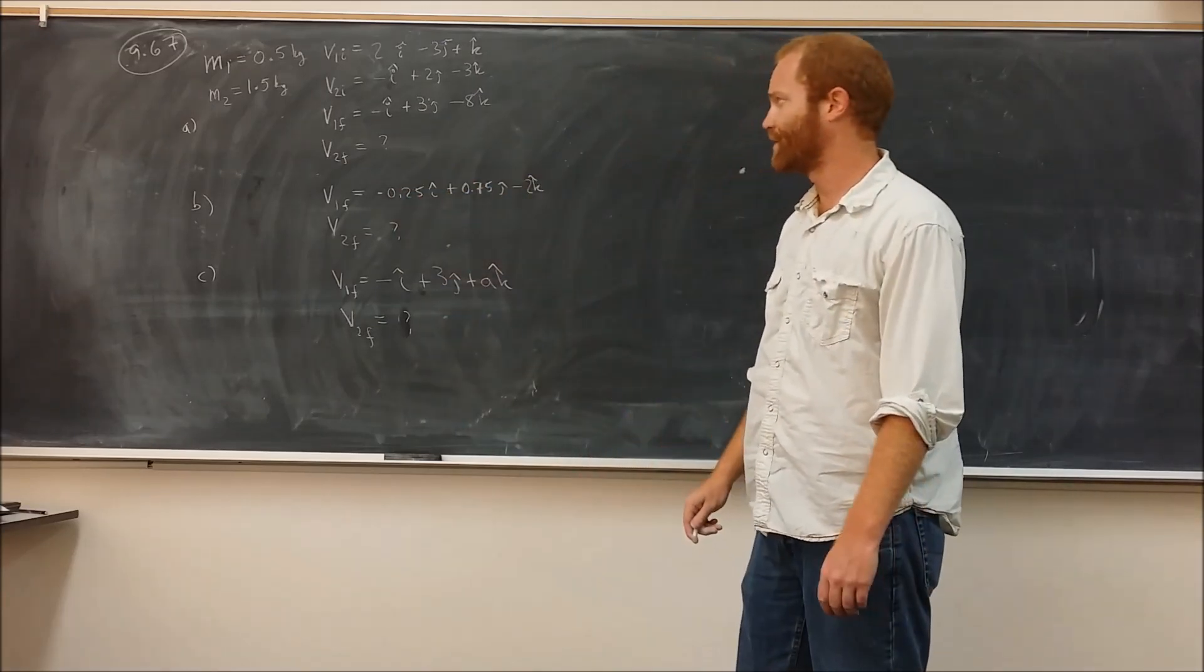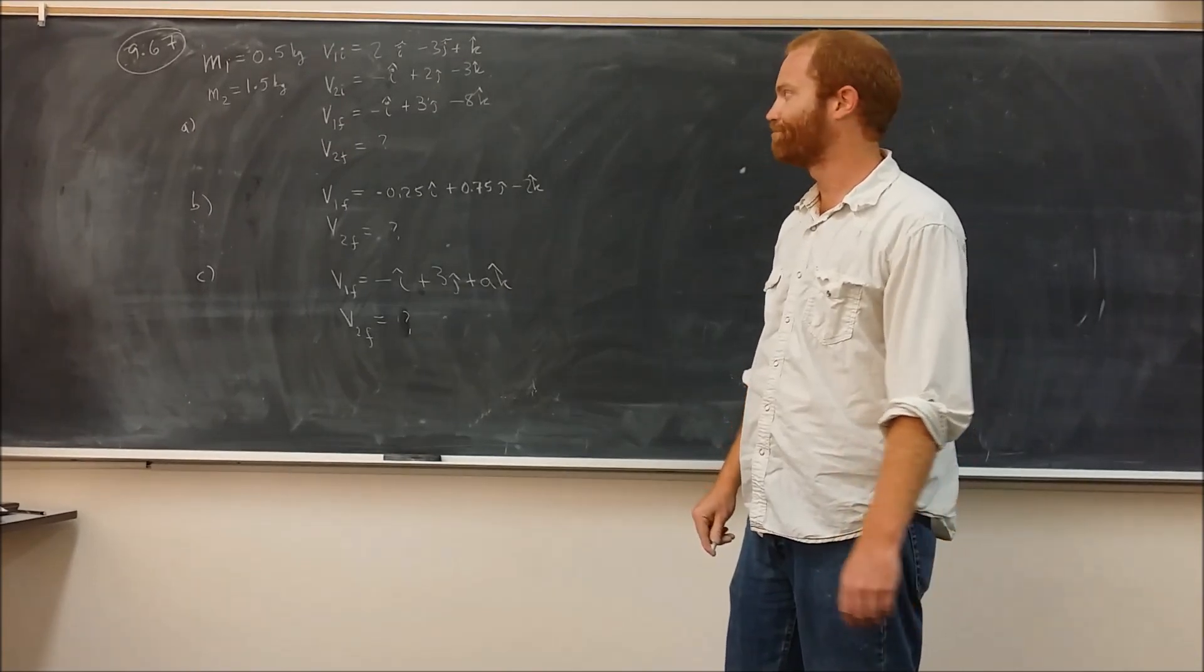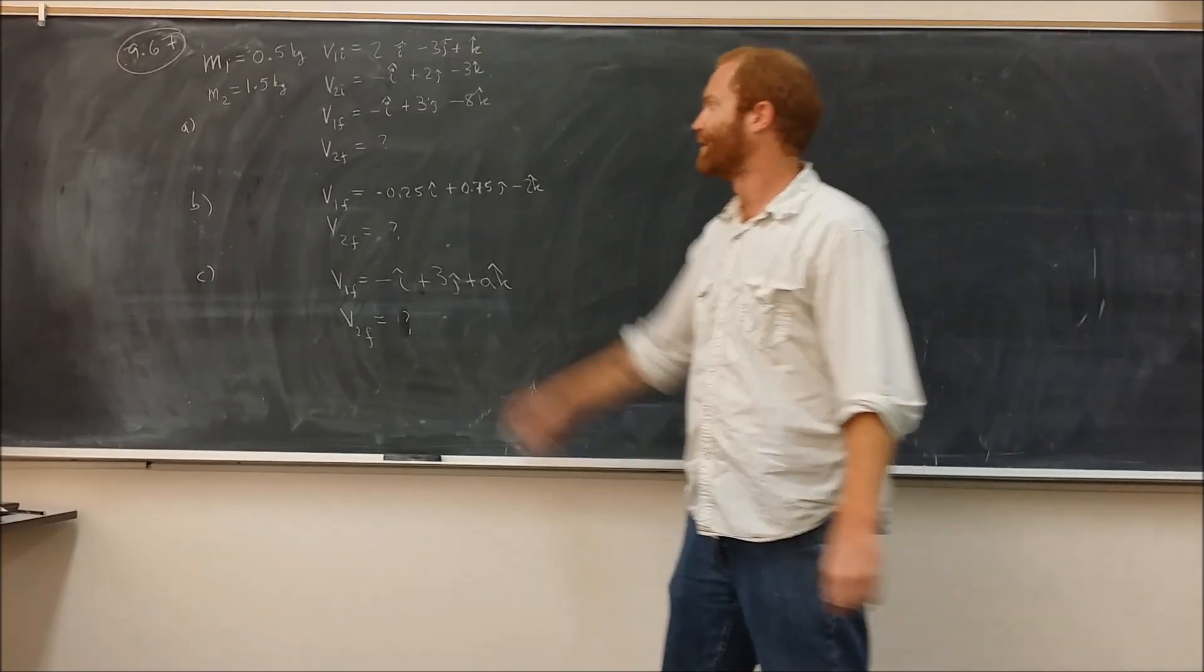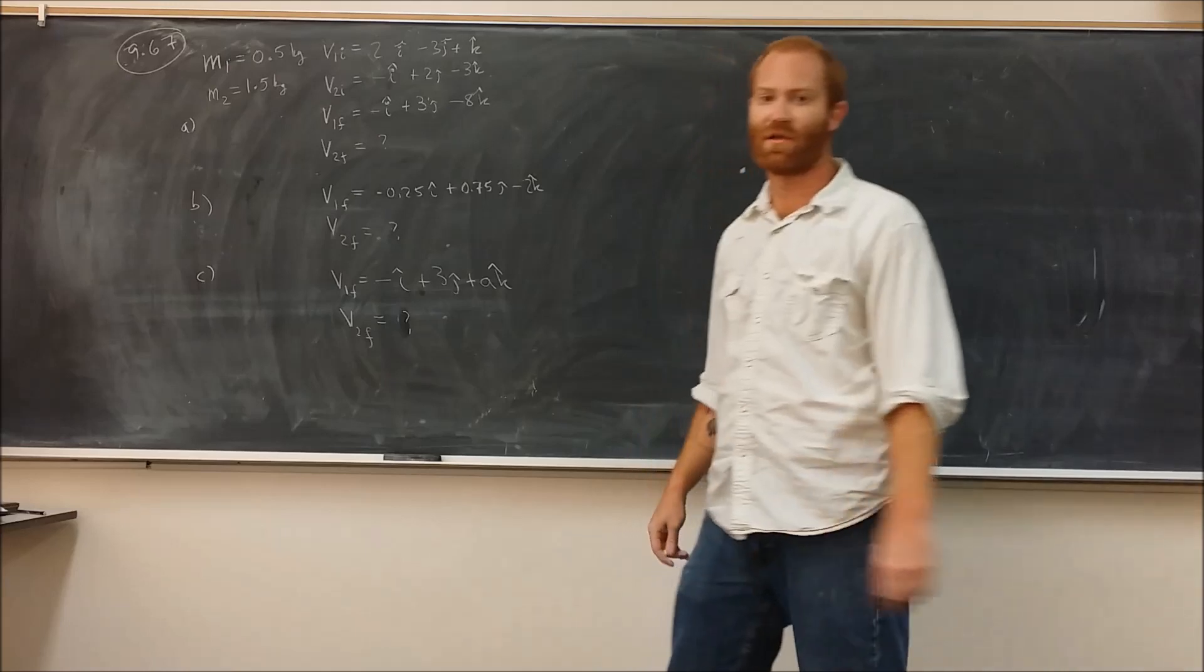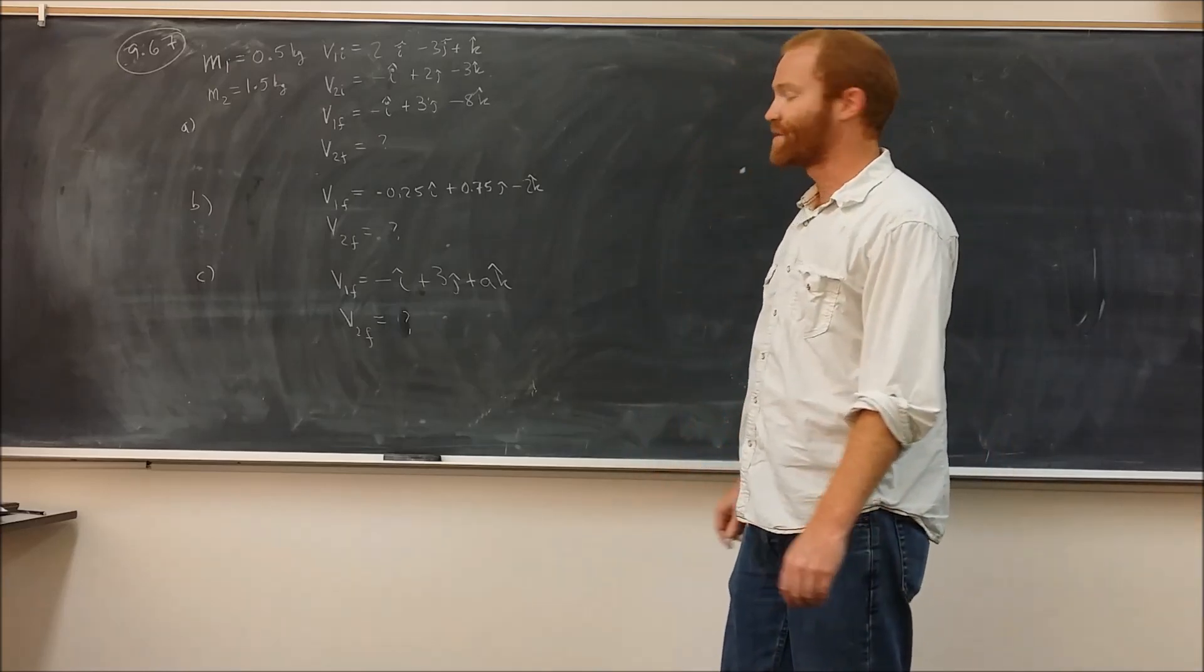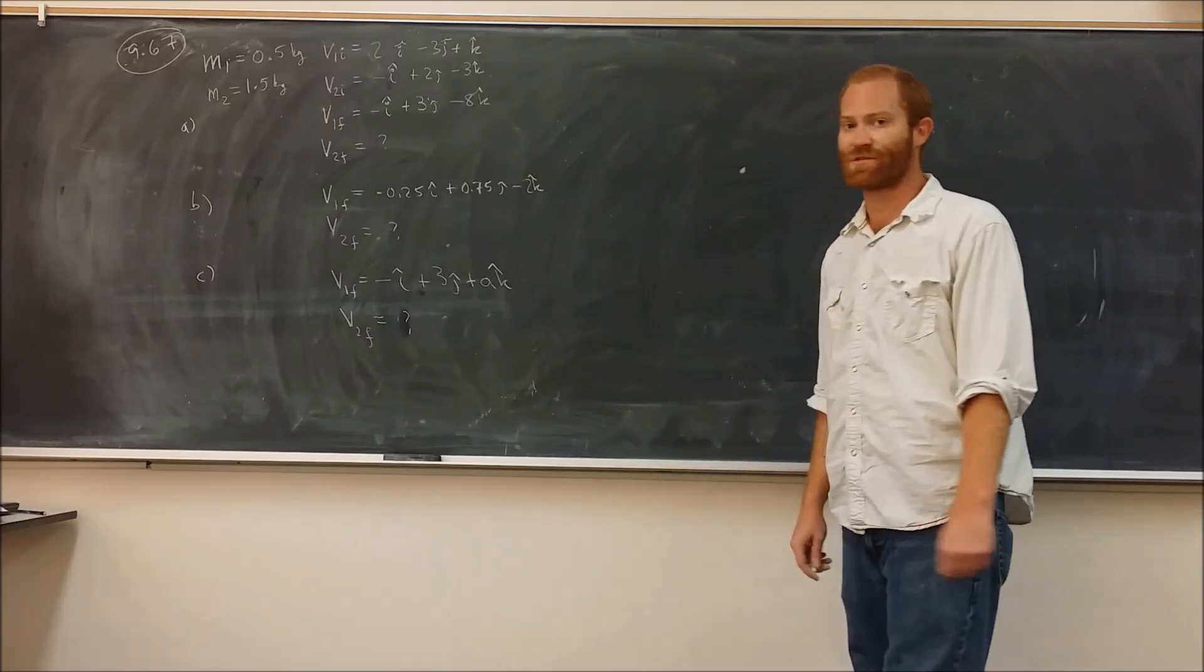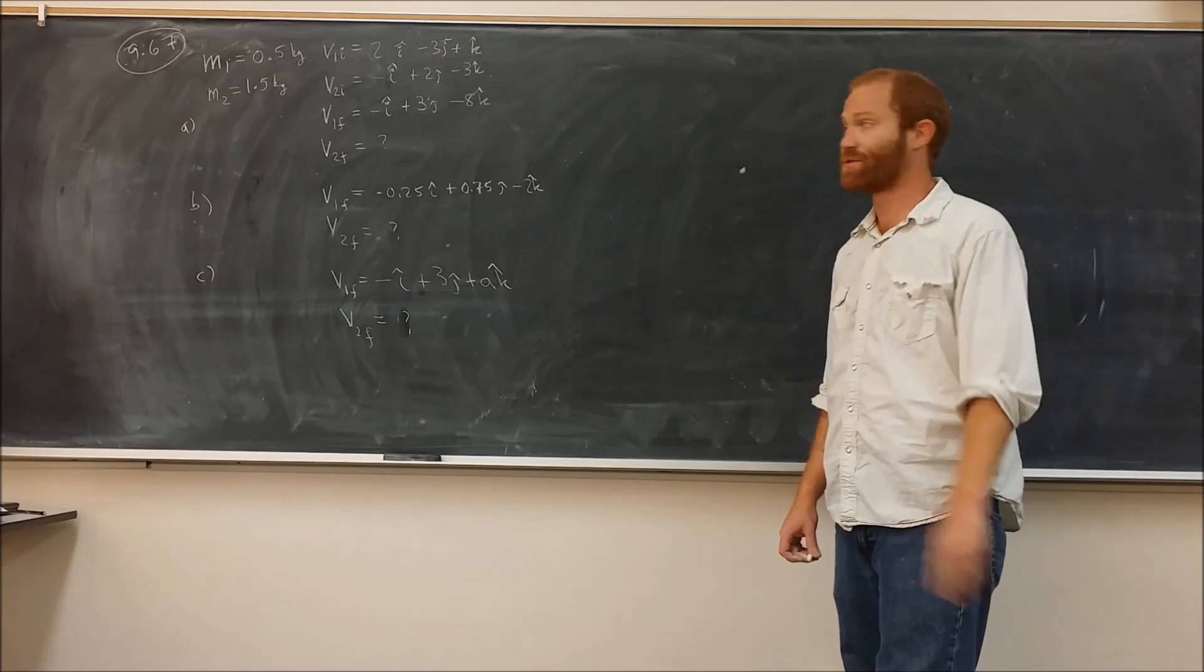For this, what we need to do is use conservation of momentum, because the two objects collide with each other. This is the final velocity of that. We want to find the final velocity of the other object. First thing to remember here is that momentum is conserved in the x, y, and z directions separately.